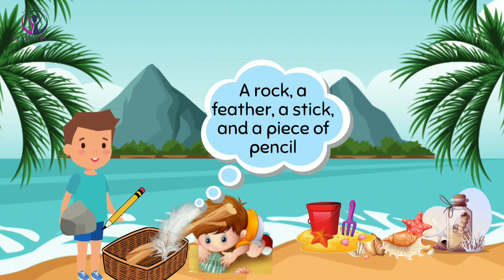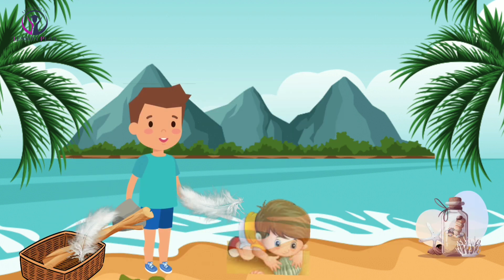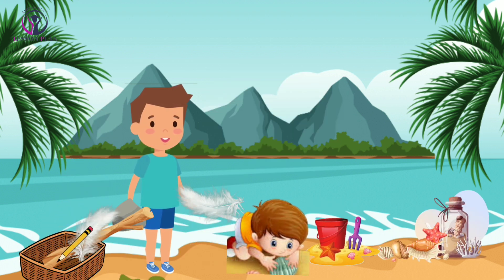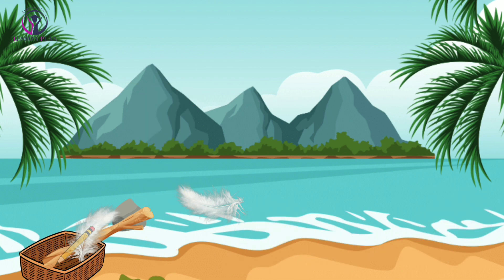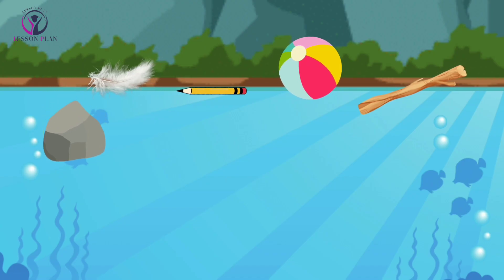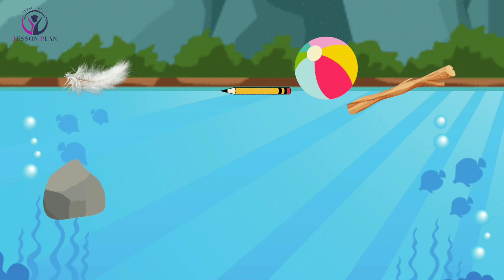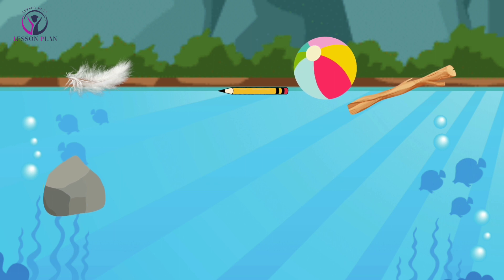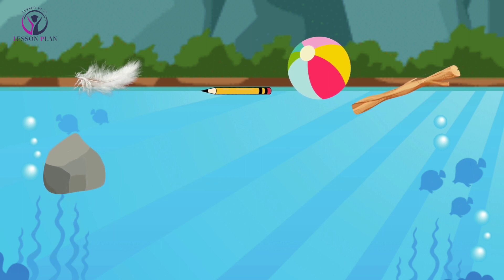Then he went to the shallow water and dropped each item into the sea one by one. The rock sank straight to the bottom while the feather floated on the surface. The stick stayed in the middle and the pencil floated too.